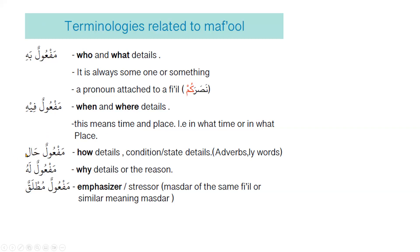Maf'ul haal means 'how' — kaifa. Like 'How did you eat it? Quickly.' 'I prayed slowly,' 'He recited fast' — something giving the answer of how is called maf'ul haal; it is a conditional state, mostly corresponding to '-ly' words in English like 'quickly' or 'slowly.' Maf'ul lahu is why — lahu means 'for it.' 'I came to the masjid for the sake of Allah' — the answer to why is maf'ul lahu.